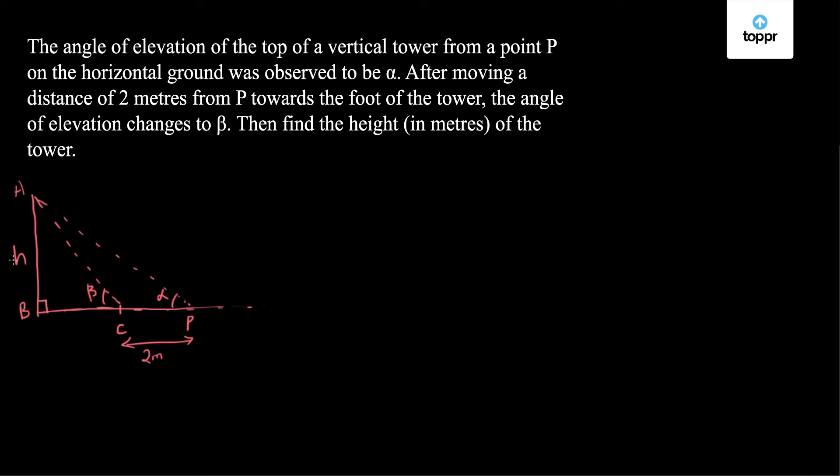With this information, I have to find the height H of the tower in meters. So in right triangle ABP, I have tan of alpha is given by H upon BP, which means BP is equal to H by tan alpha.